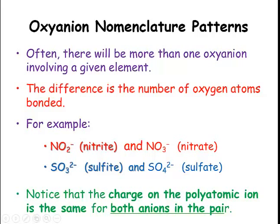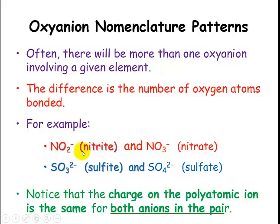There will often be more than one oxyanion involving a given element, and the difference is going to be the number of oxygen atoms bonded to it. For example, nitrite has two oxygens and nitrate has three. Sulfite involves sulfur with three oxygens, and sulfate has sulfur with four oxygens. Notice on both pairs the charge doesn't change — just the number of oxygens. The charge stays the same on that polyatomic.